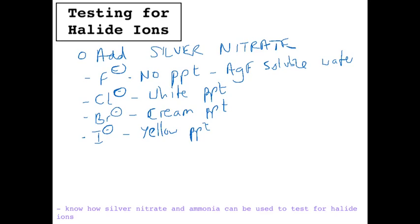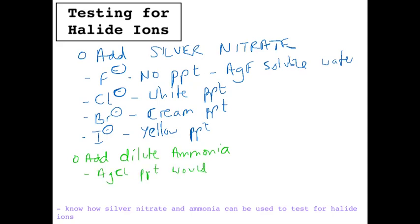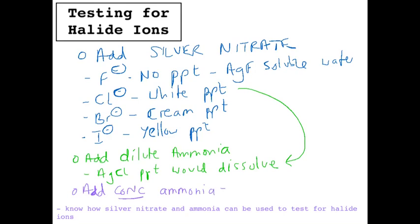The next step is to add dilute ammonia — the silver chloride precipitate will dissolve because it is soluble in dilute ammonia, but the silver bromide and silver iodide will not. Finally, you add concentrated ammonia, and then the silver bromide precipitate will dissolve.